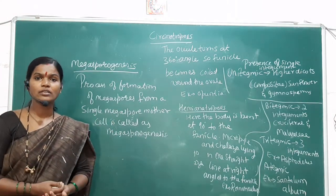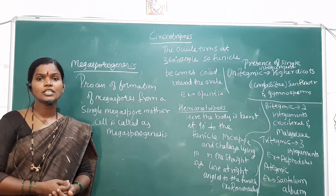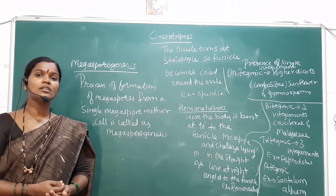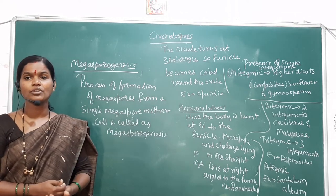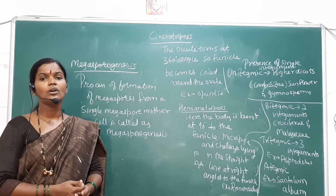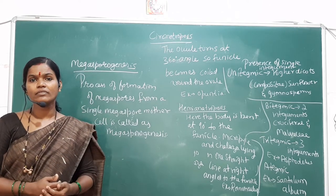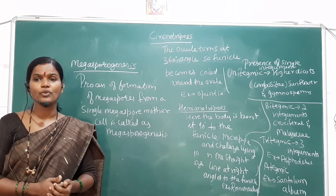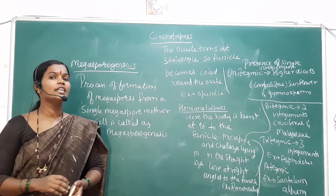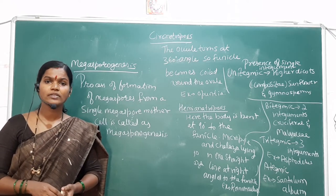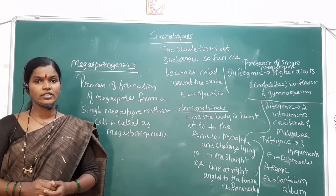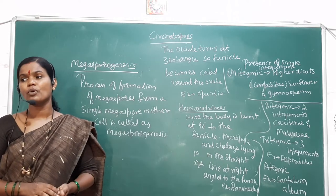The megasporogenesis process starts from the archesporial cell, which is present near the nucellar region. The nucellus is a nutritive tissue that provides nutrition to the embryo sac. From the nucellar cells, hypodermal cells divide and convert into archesporial cells. The archesporial cell undergoes periclinal division and produces two types of cells: the outer parietal cell and the inner sporogenous cell.